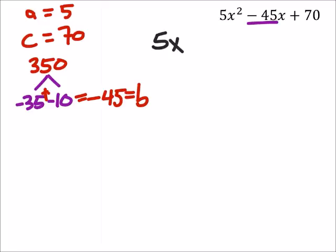So that tells me what I'm going to split that negative 45x up into. I'll start with my 5x squared, and then I've got negative 35x minus a 10x plus the 70.